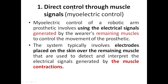Myoelectric control of a robotic arm prosthetic involves using electrical signals generated by the remaining muscles to control the movement of the prosthetic. Imagine the person's hand is cut — half of the muscles are still there and still functional. We take the help of these remaining muscles to control the movement of the prosthetic.